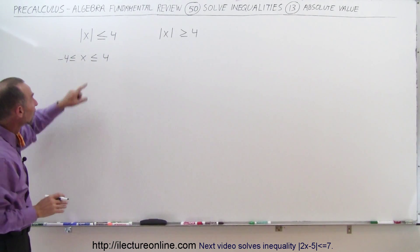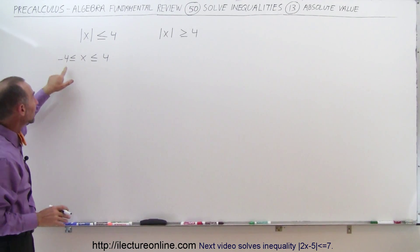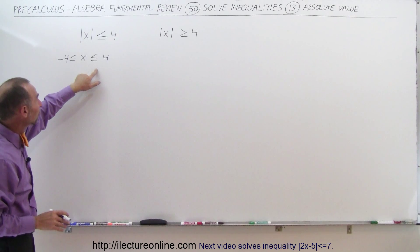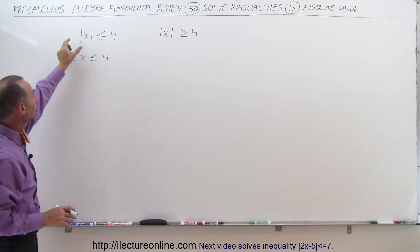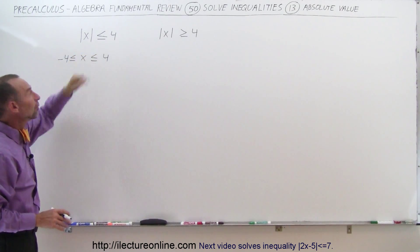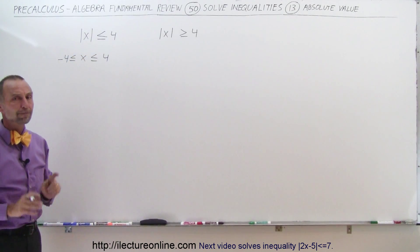For all values of x between negative 4 and positive 4, when you take the absolute value of it, it will be less than or equal to 4.